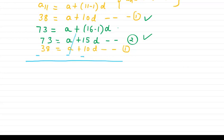Here a you can cancel. So you will get 15 minus 10 will be 5d, and this side you will get 35 equals 5d. So the value of d will be 7.